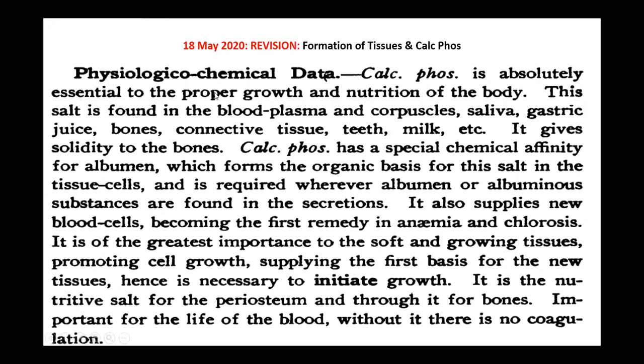Then the next day we discussed Calcarea Phos. Before that we learned a short theory about the formation of tissue and how inorganic solids — these tissue salts — take part in the formation of tissue. If anything is lacking, it ultimately reflects in signs, symptoms, and disease. Calcarea Phos has a lot of action because it is present in many parts of the body: blood plasma, corpuscles, saliva, gastric juice, bones, connective tissue, teeth — giving it a wider range of action and producing numerous pathologies.